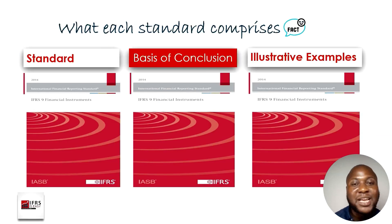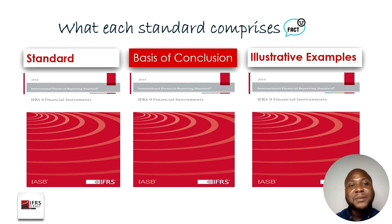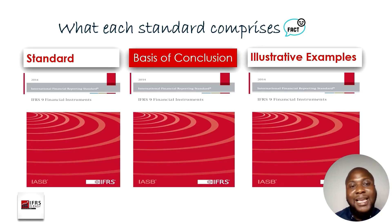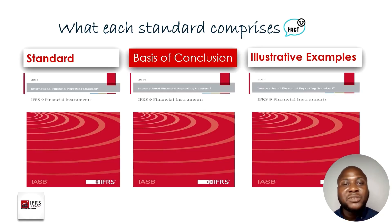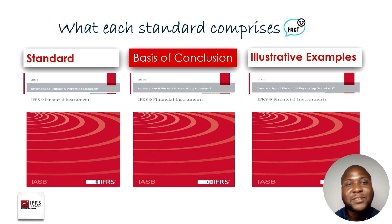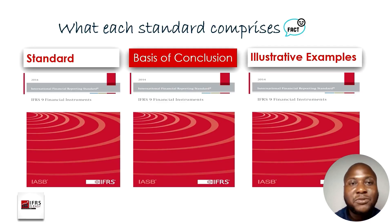Each of those standards — IAS 32, IFRS 7, and IFRS 9 — all have the standard itself, an accompanying basis of conclusion, and an illustrative example. The basis of conclusion explains the standard while the illustrative examples give practical scenarios that address how to apply them. Those documents have been attached to this section for you to take advantage of.